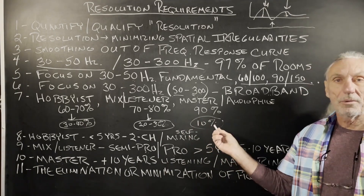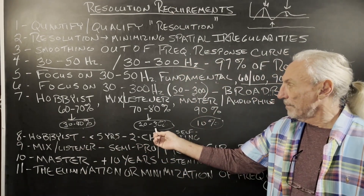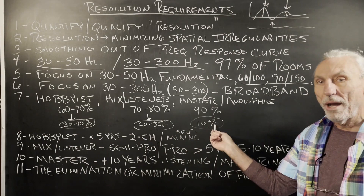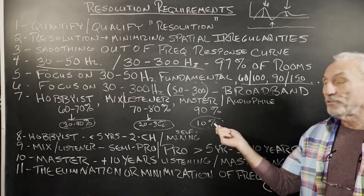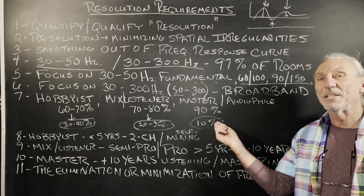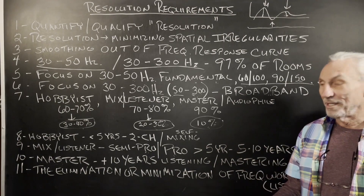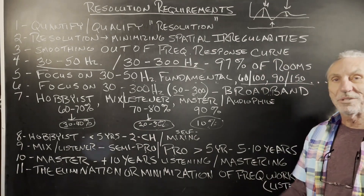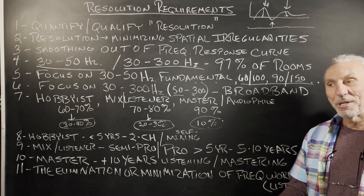All it is is working around fewer problems — that's how you get resolution. The hobbyist is going to have to work around 30 to 40 percent of room problems. The mix/listener combination, 20 to 30 percent. The mastering engineer, 10 percent. You're always going to have about 10 percent issues in a mastering room, and they're always in the low end. But the key is he knows it — it's predictable and consistent, and he can apply that knowledge to his mixes. More distortion means more things to work around, and that zaps your creative ability. You spend more time working around than creating.